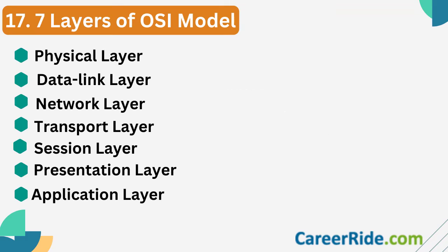Question seventeen: Name the seven layers of the OSI model. The seven layers of the OSI model are: physical layer, data link layer, network layer, transport layer, session layer, presentation layer, and application layer.